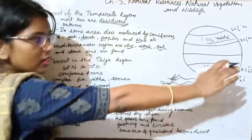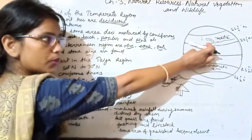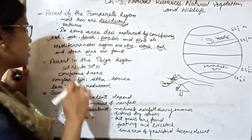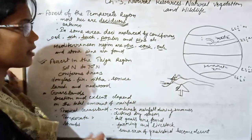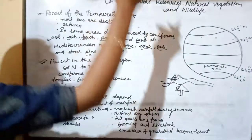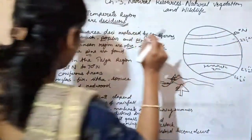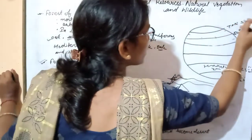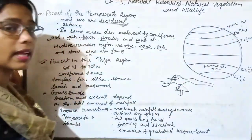To summarize, three types of forests are found in the temperate region: deciduous, Mediterranean, and coniferous. Next is the forest found in the Taiga region. Most Taiga forests lie between 50° North latitude to 70° North latitude, and coniferous forests are found in this region.